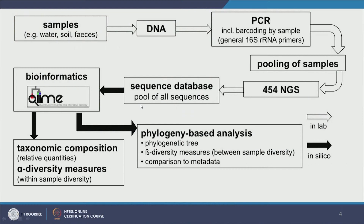After pooling, we perform 454 NGS — 454 pyrosequencing, which I have discussed in a previous lecture. This creates FASTQ files. From the FASTQ files I pull all the data and do bioinformatics: I check quality scores, look for chimeras which are artificial sequences, and do various analyses. In the bioinformatics step we also remove the barcodes and replace them with sample labels — sample 1, sample 2, and so on — each with thousands or millions of associated sequences.